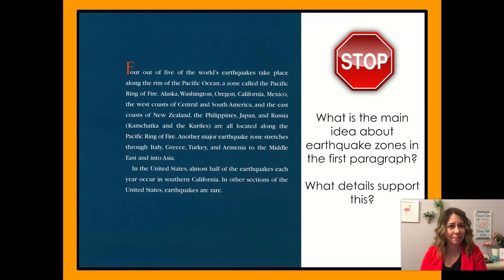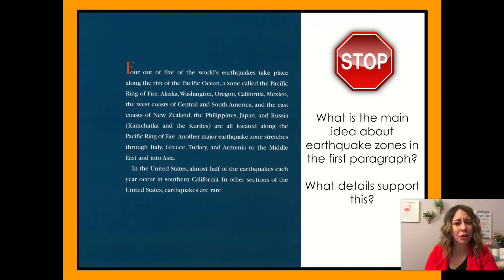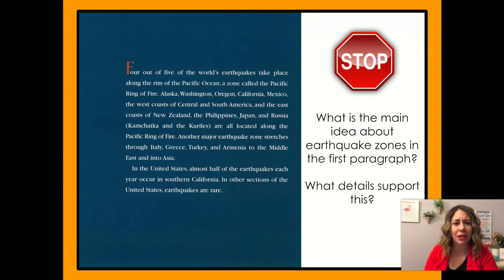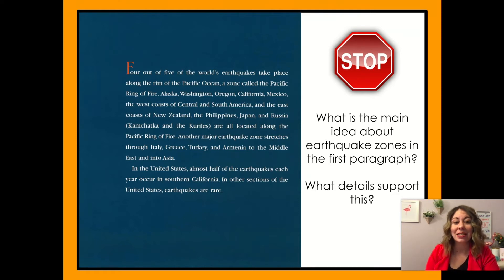Have you ever felt an earthquake here? I haven't felt an earthquake where I live in Kansas. But that doesn't mean they don't happen in Kansas — we'll have to learn more about that later. Our question: what is the main idea about earthquake zones in the first paragraph? Well, four out of five of the world's earthquakes take place along the rim of the Pacific Ocean — the Pacific Ring of Fire. A good hint is that the main idea is often in the first sentence. So I could say: most earthquakes happen in the Pacific Ring of Fire. Details that support this include four out of five earthquakes happen there, and almost half of U.S. earthquakes occur in Southern California, which is part of the Ring of Fire.